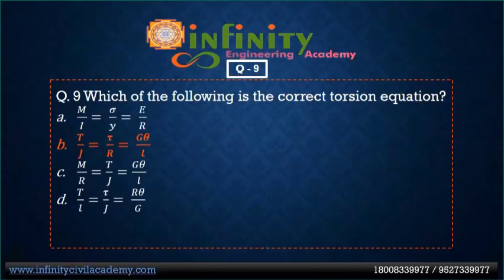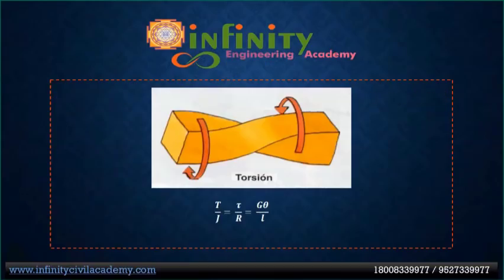Question 9: The correct torsion equation is option B — T/J = τ/R = Gθ/L. Torsion is defined as the resultant moment on any one side of a section about the longitudinal or polar axis of the member.